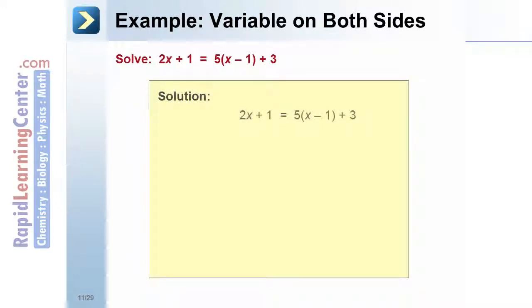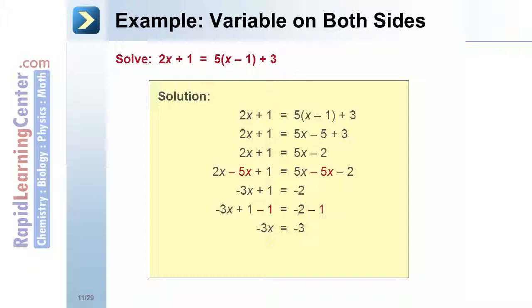Solution: Simplify the right side using the distributive property and combining like terms: 2x + 1 = 5x - 2. Get the variables together by subtracting 5x from both sides: -3x + 1 = -2. Subtract 1 from both sides: -3x = -3. Divide both sides by -3: x = 1.